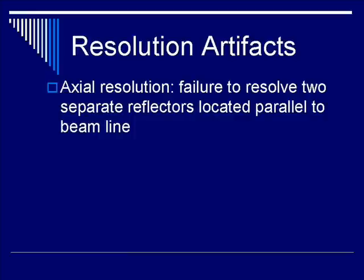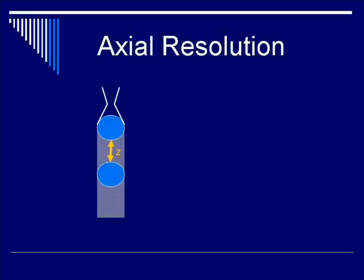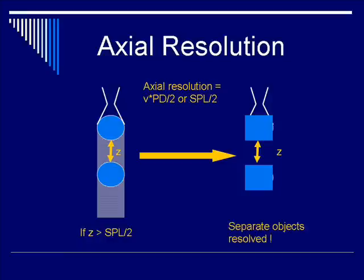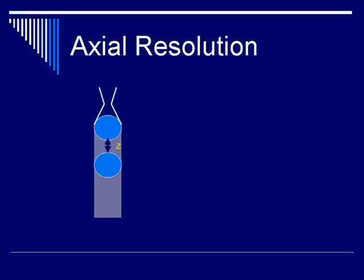Let's start by talking about axial resolution. By definition, axial resolution is defined as the failure to resolve two separate reflectors located parallel to the beam line. Taking two point reflectors separated by spacing Z, recall that axial resolution equals the velocity of sound times pulse duration divided by 2, or simply the spatial pulse length divided by 2. If the separation Z is greater than SPL/2, you can resolve the two objects — two pixels will show up on the ultrasound screen separated by spacing Z.